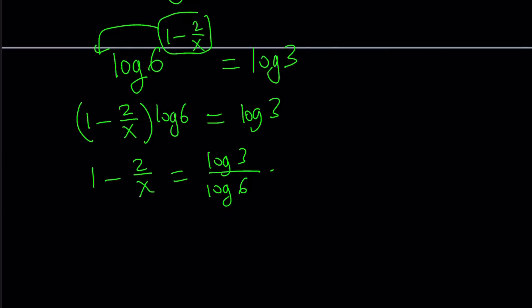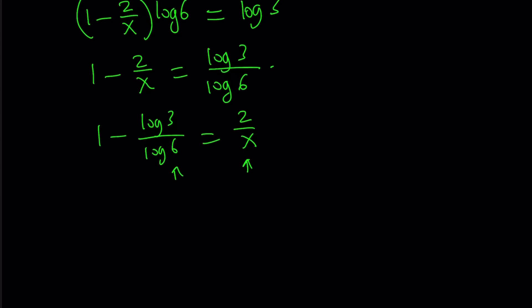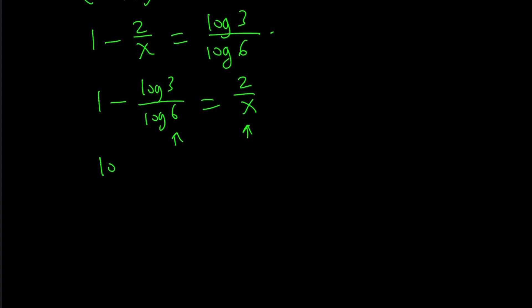So we have log 3 over log 6. So here's what we can do. First of all we can go ahead and switch the 2 over x and log 3 over log 6. So I can write it like this: 1 minus log 3 over log 6 equals 2 over x. In other words the sum of these two terms is equal to 1. Now we can make a common denominator on the left hand side. Log 6 minus log 3 over log 6 equals 2 over x.